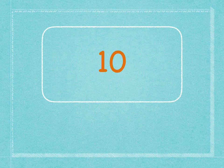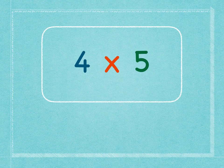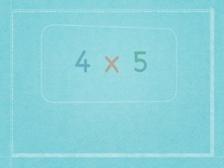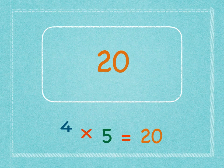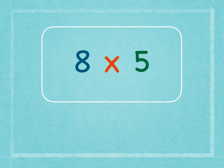Two times five is ten. Two times five is ten. Four times five is twenty. Four times five is twenty.